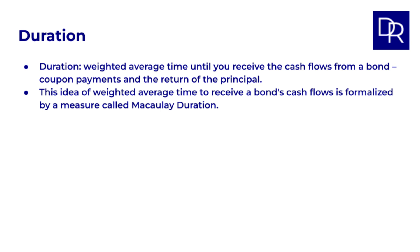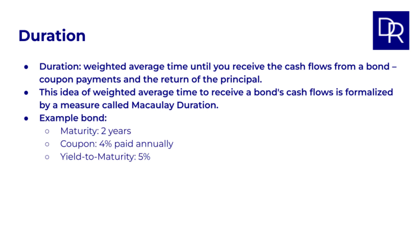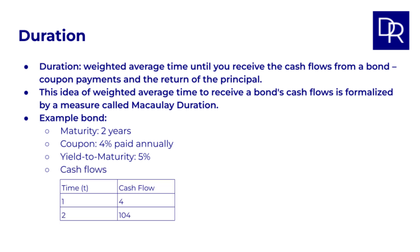The formula for this can be quite intimidating, so we'll look at a numerical example first. Let's consider a bond with a maturity of 2 years, a coupon of 4% paid annually, and a yield to maturity of 5%. If the face value is 100, cash flows are a coupon of 4 in year 1, and a coupon of 4 plus the principal repayment of 100, so 104 in total in year 2. So the cash flows take place at t equals 1, meaning after 1 year, and at t equals 2, after 2 years.